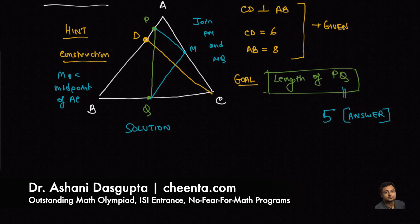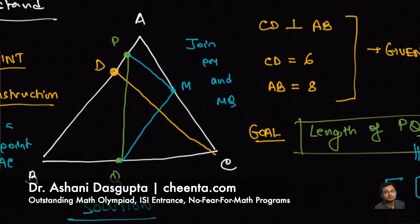You have to observe that in the triangle ADC, P is the midpoint of AD and M is the midpoint of AC. So you can apply the midpoint theorem and say that PM is parallel to DC. PM is half of DC. And DC is given to be 6, so PM is 3.